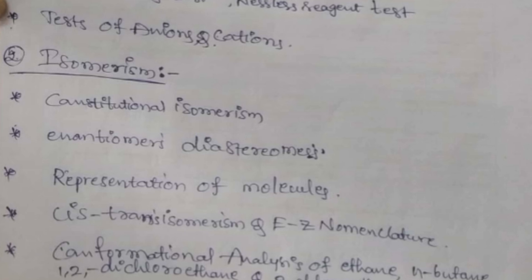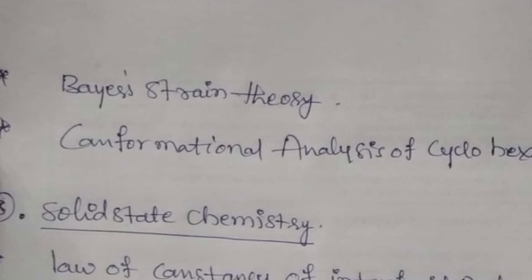If you want to score O grade in this subject, you need to prepare all these four units, whatever questions I have given. So this is the fourth unit. Baeyer strain theory, conformational analysis of cyclohexane and butane. So whatever questions I am providing here, try to learn all that.